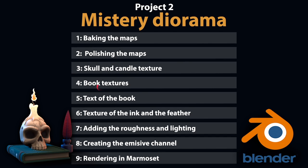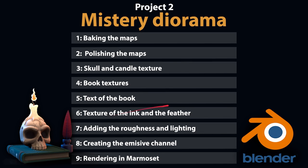We are going to start texturing the skull and the candle, then the book, and we are going to use a method called stencil to project an image onto the side and front of the book. We will continue texturing the rest of the objects. When all the color texture is applied, we are going to start adding the roughness and the lighting — putting some lights to see the materials — and adding all the specularity properties for the surfaces, since some objects are glossier than others. Then we are going to create the emission map, putting some light information and exporting it as an image, and finally exporting all the maps to make the presentation in Marmoset.